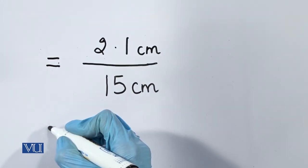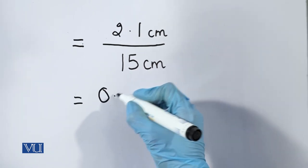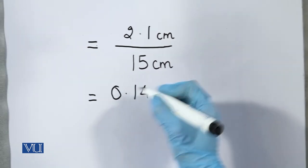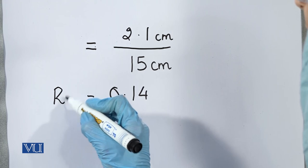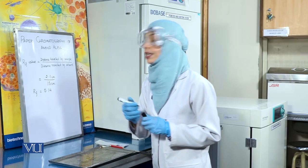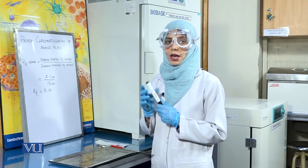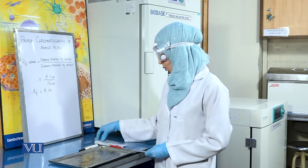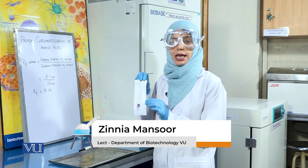Hence, the RF value comes out to be 0.14, which is the RF value for the amino acid lysine. Therefore, we can identify that our sample contained the amino acid lysine.